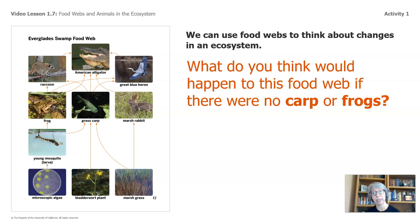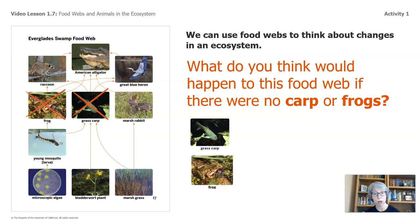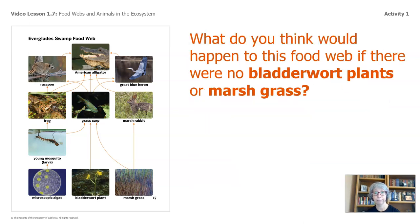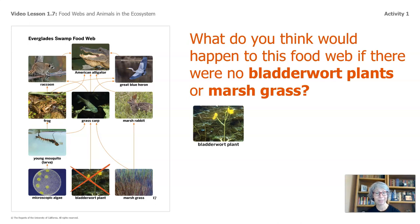Food webs help us understand how molecules flow through an ecosystem. We can use food webs to think about changes in an ecosystem. What do you think would happen to this food web if there were no carp? Or frogs? What do you think would happen if there were no bladderwort plants? Or marsh grass?